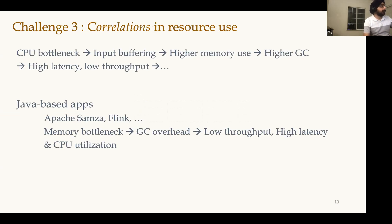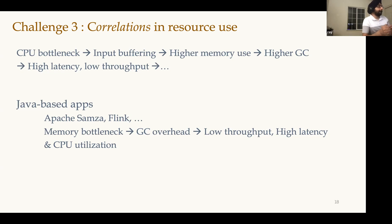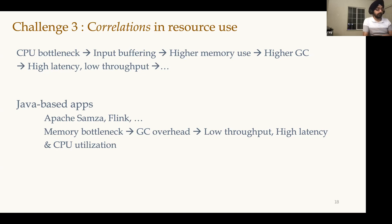Third challenge: stream processing applications operate continuously under variable load, developing correlated resource usage. For example, a CPU bottleneck causes slower processing, which leads to buffering of input, higher memory use, higher GC, and ultimately higher latency and low throughput. For Java-based systems like Samza and Flink, even a memory bottleneck leads to higher GC, low throughput, and high latency, with the process spending more time on GC and thereby exceeding CPU utilization.